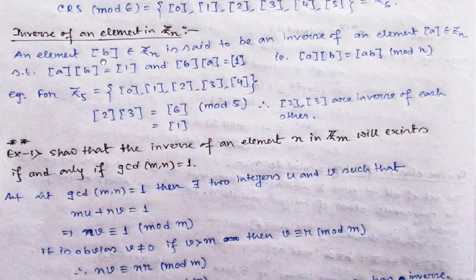So any element B-bar — which is actually a class, not a single element but contains many elements — is said to be the inverse of an element A-bar in Z_N, if their product gives us class 1. When we multiply the two classes, we get class 1.